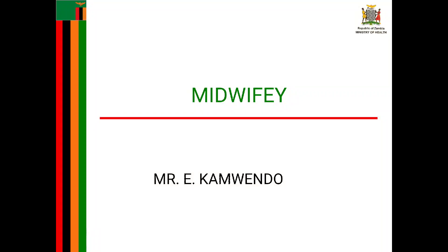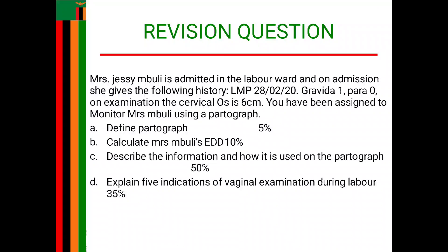In today's session, we are going to look at the following question. Mrs. Jessie Mboli is admitted in the labor ward and on admission she gives the following history: the LMP is 28 February 2020, gravida 1, para 0. On examination, the cervical os is 6 centimeters. You have been assigned to monitor Mrs. Jessie Mboli using a partograph. Question A: define partograph. Question B: calculate Mrs. Jessie Mboli's EDD. Question C: describe the information and how it is going to be used on the partograph. Question D: explain five indications for vaginal examination during labor. So we'll go straight into the question.